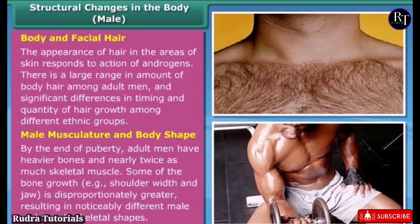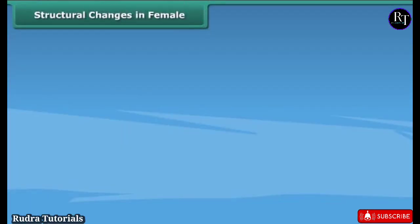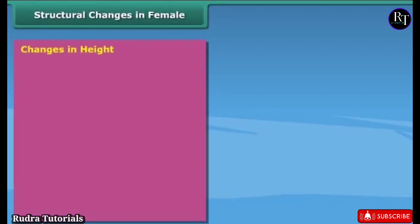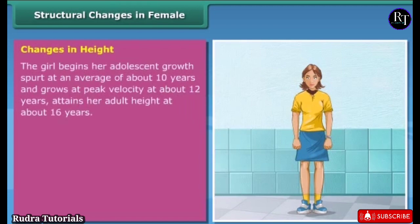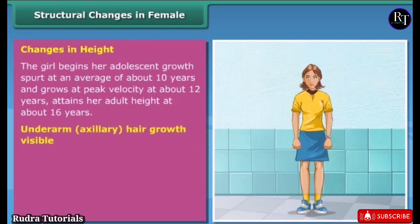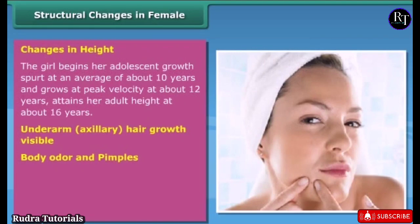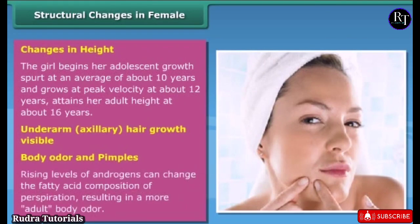Structural changes in females include changes in height: girls begin their adolescent growth spurt at an average of about 10 years, grow at peak velocity at about 12 years, and attain adult height at about 16 years. Underarm (axillary) hair growth, visible body odor, and pimples also occur. Rising levels of androgens can change the fatty acid composition of perspiration, resulting in a more adult body odor.